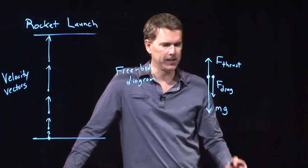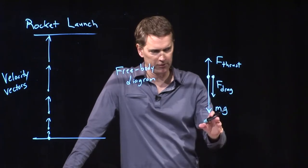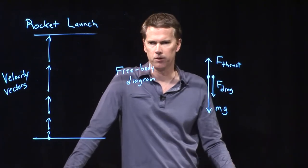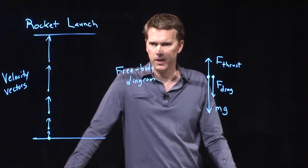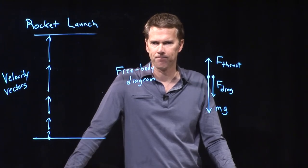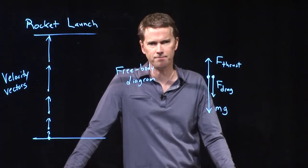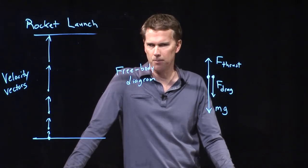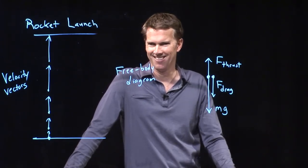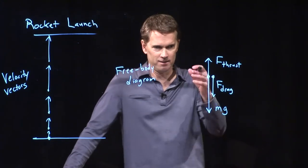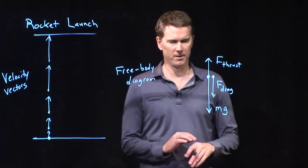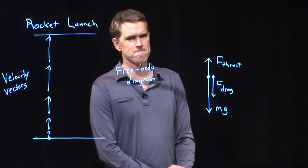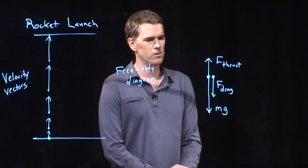So this is what my free body diagram looks like. I have two forces going down and one force going up. Is everybody happy with my diagram? You should not be happy with my diagram. What are we doing wrong? Anda, what do you think? I think the thrust should be longer than the force of gravity — because the rocket is accelerating upwards.